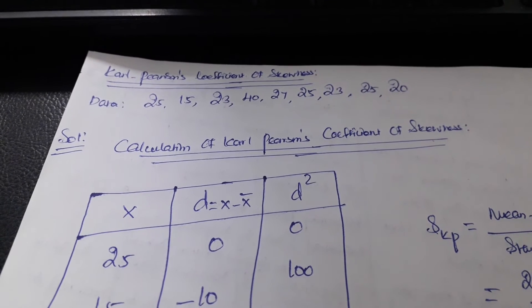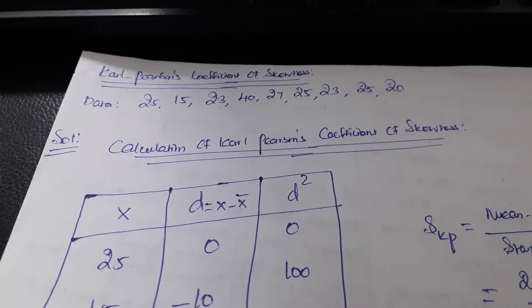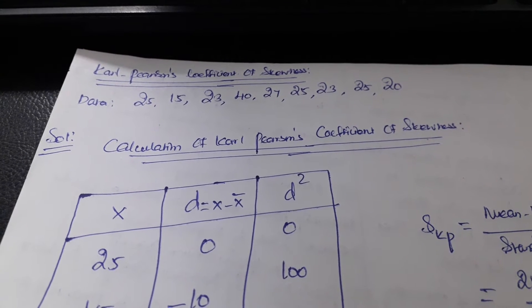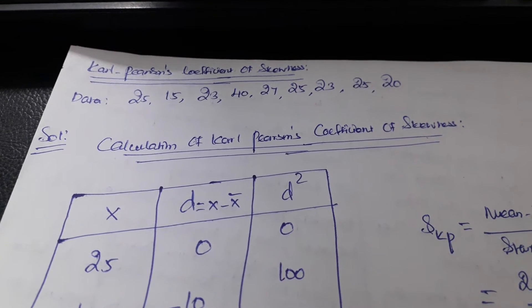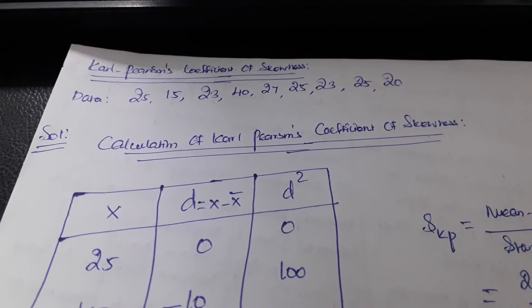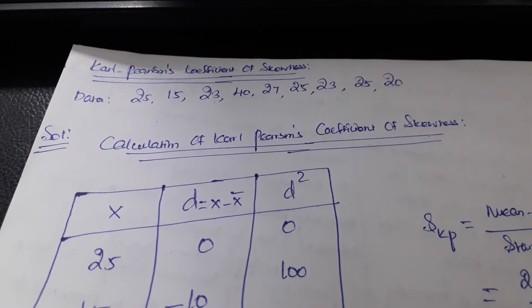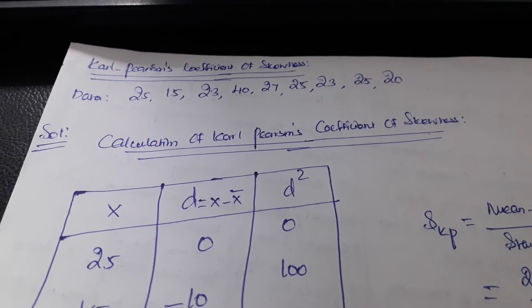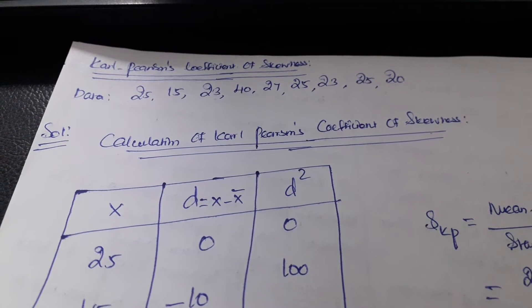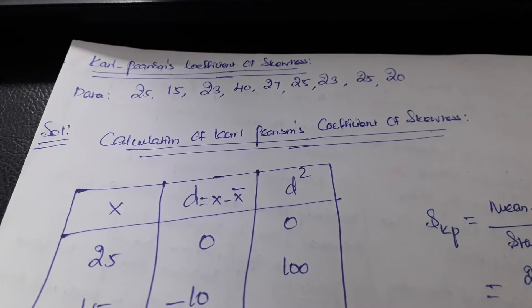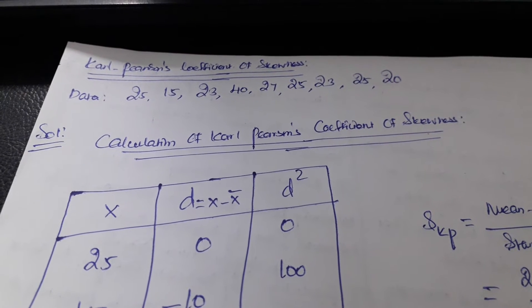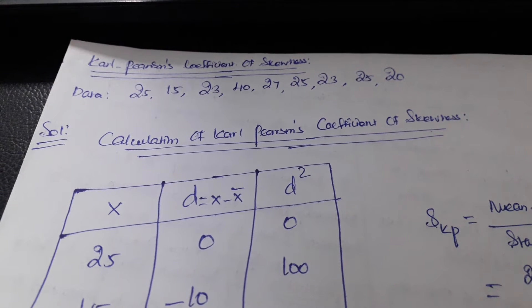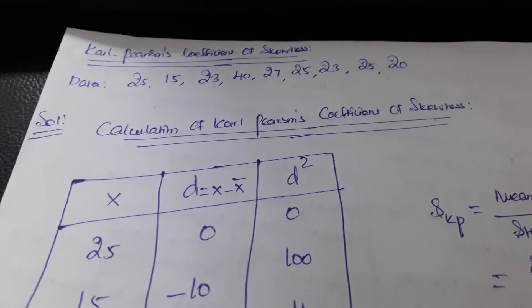This is an individual series. We have different kinds of series, and according to that the formula will differ. Here it is individual series — sometimes we can get a discrete series or continuous series, and according to that we have to change the formula.